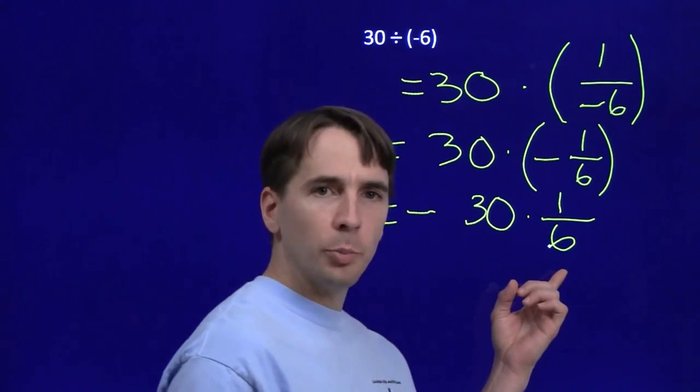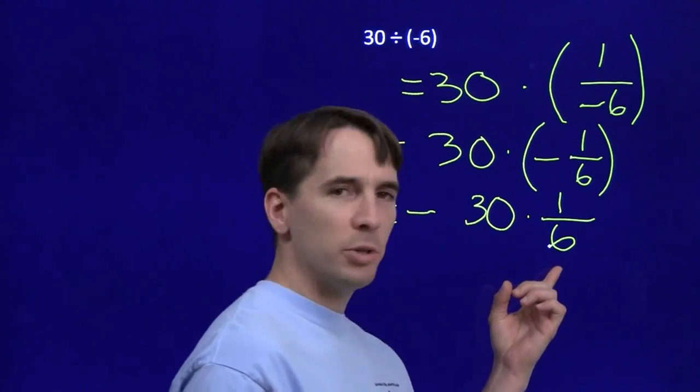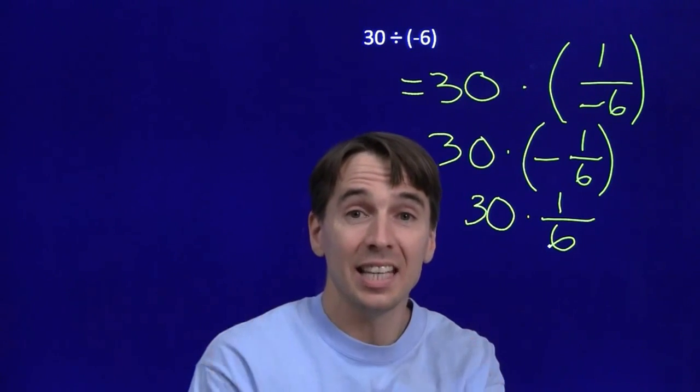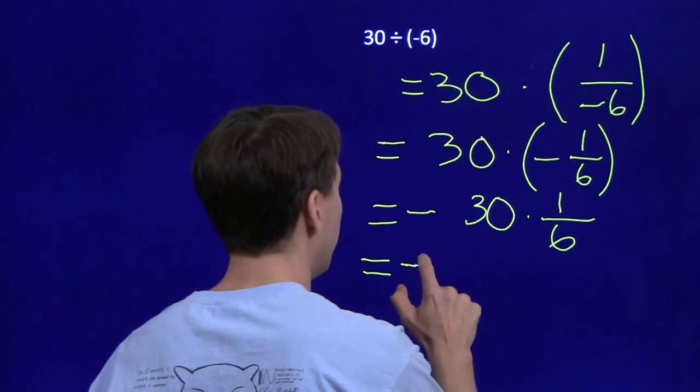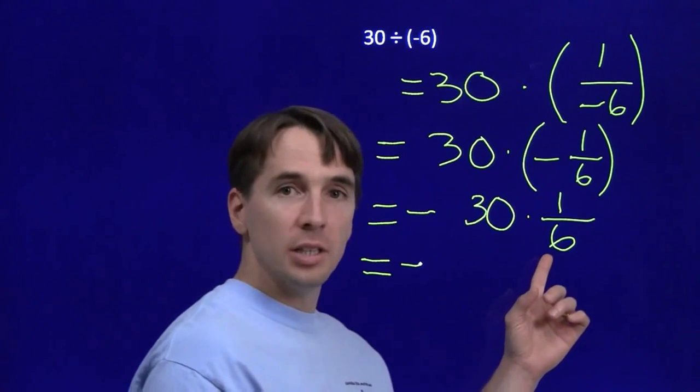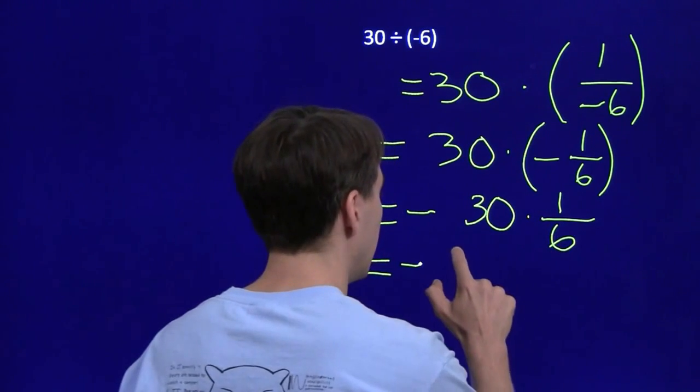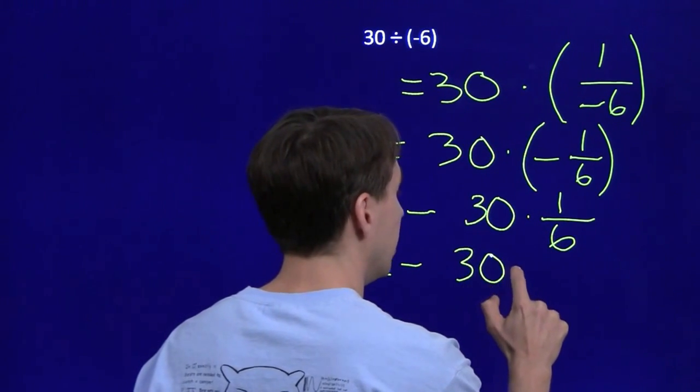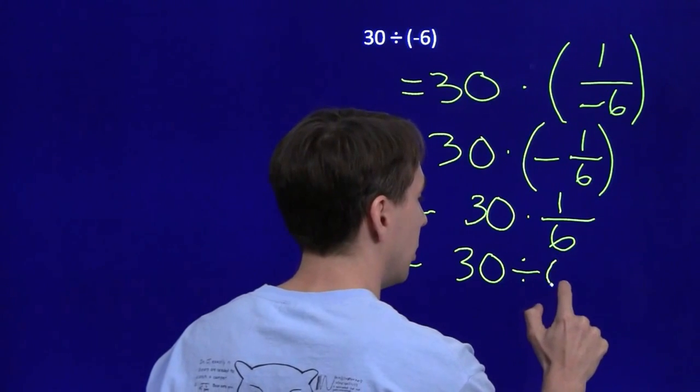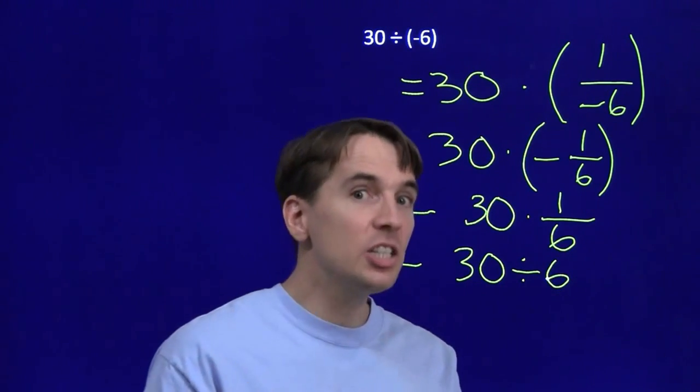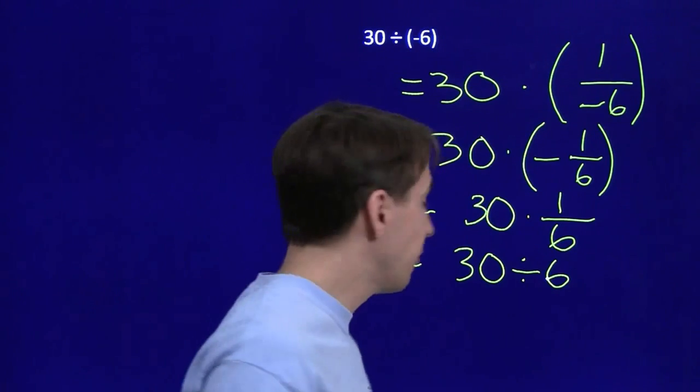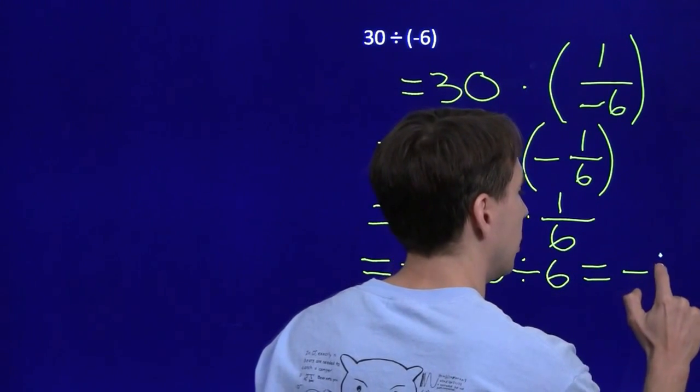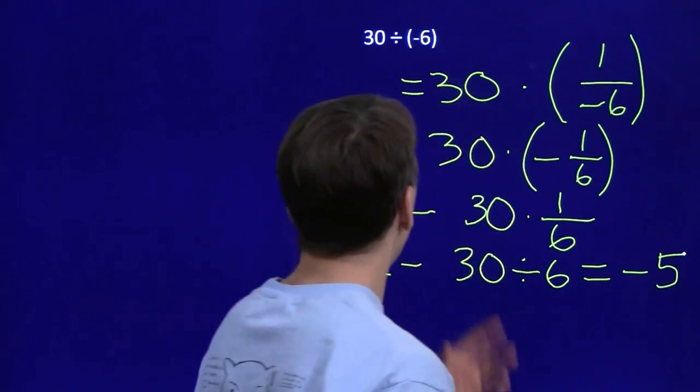So this will be the negative of 30 times the reciprocal of 6. Multiplication by a reciprocal, that's the same thing as division. From our very definition of division, 30 times 1 over 6 is 30 divided by 6. And 30 divided by 6, that's just 5. And this comes out to be negative 5.